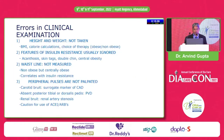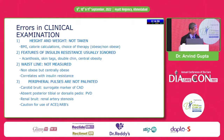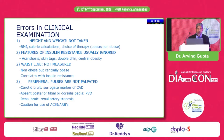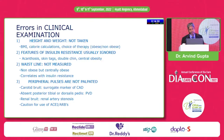Let us start with simple, basic day-to-day errors in clinical examination. Most of the time in a busy clinic we don't measure the height and weight of the patient. These days we are using GLP-1 receptor agonists, SGLT-2 inhibitors, and especially biguanides, so we must know the patient's height and weight. BMI, height, and weight are very important — not just for diagnosis, but for therapy and prognosis as well.